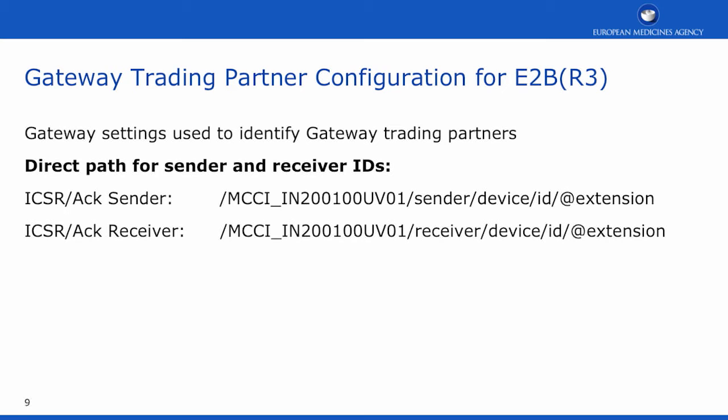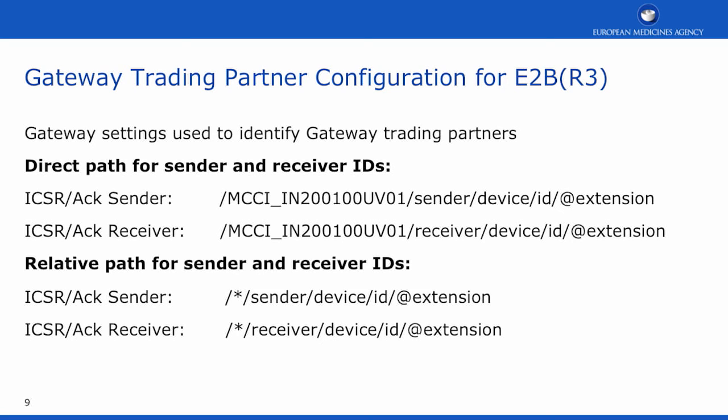Configuring the gateway for E2B R3 is also required. The gateway settings used to identify the gateway trading partners are provided below. Depending on your software, you will need to use either the direct path or the relative path to be able to identify the sender and receiver IDs within the E2B R3 messages.